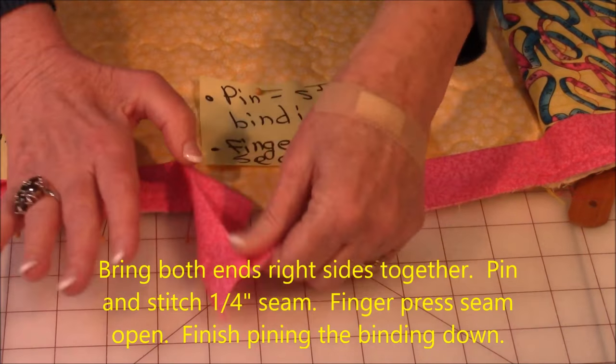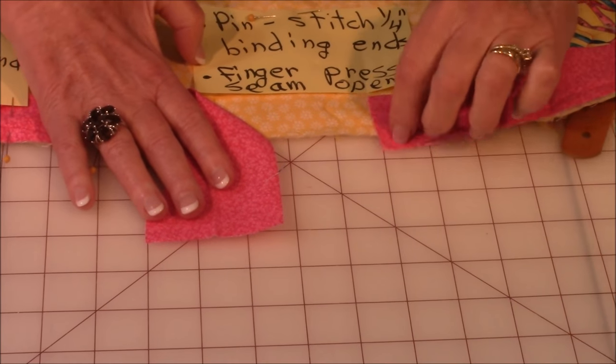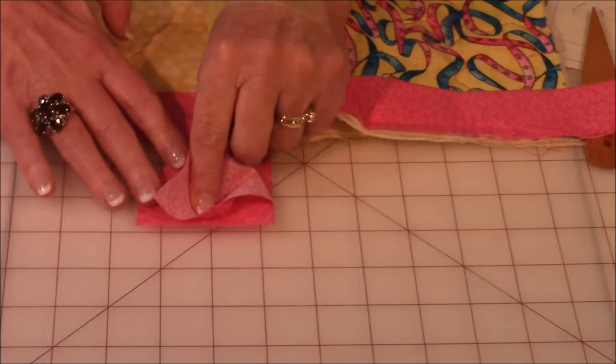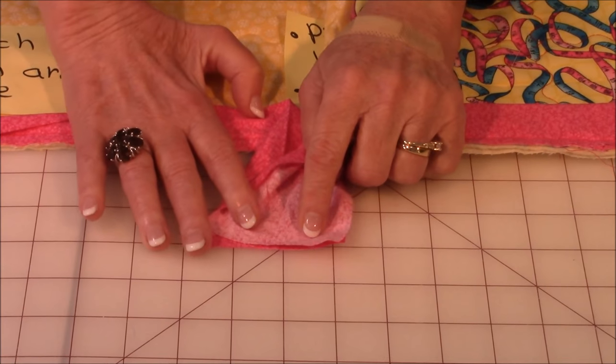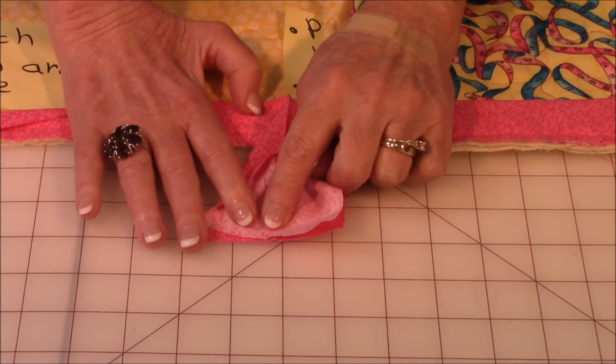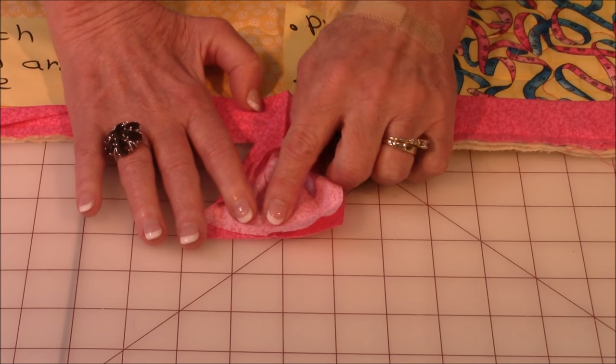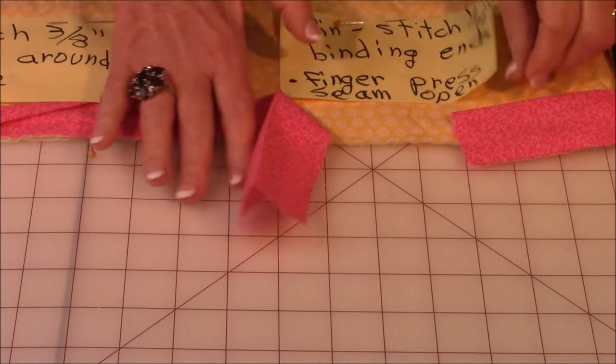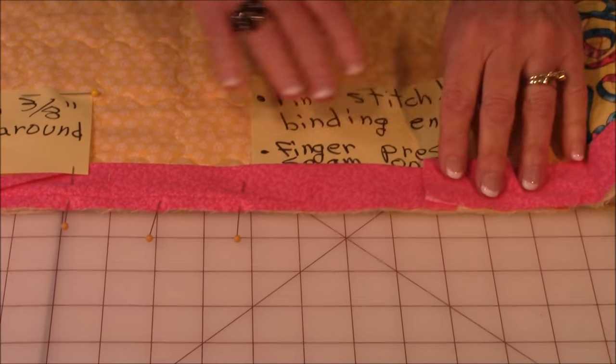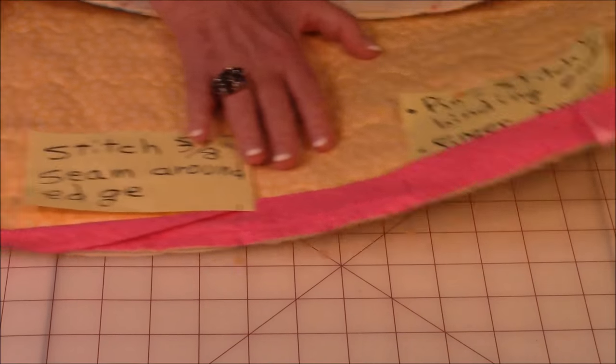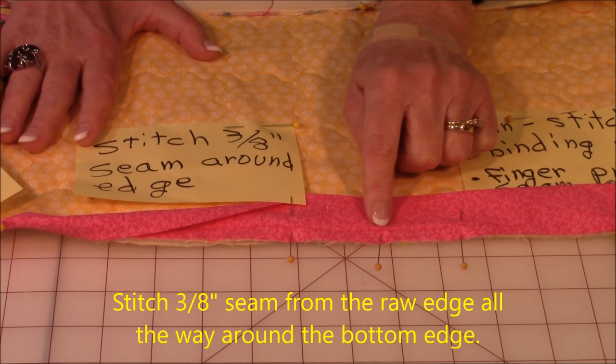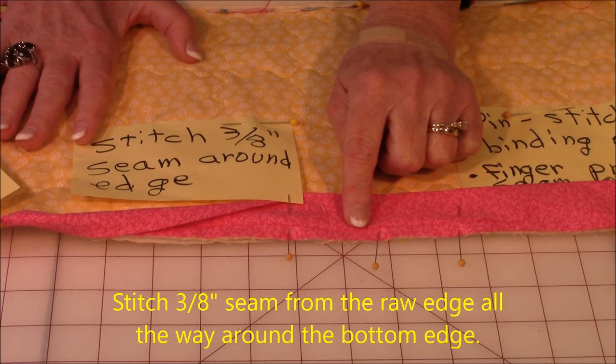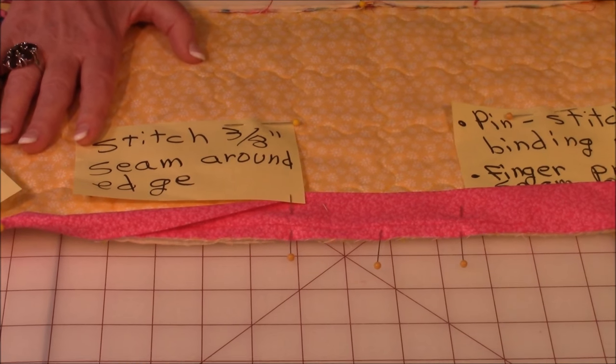Then you're going to bring the two ends together. And open it up. And you're going to bring the right sides together. Like this. Then pin and stitch one quarter inch here. Then finger press that seam open. And then fold it back. And finish pinning it down. Then stitch three quarters inch seam allowance all the way around the lower edge. Stitching the binding on.